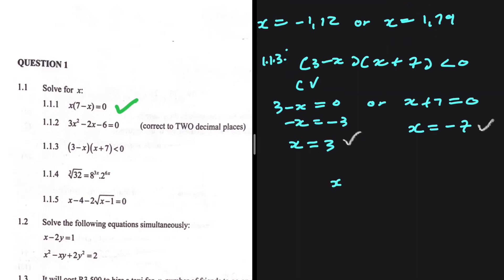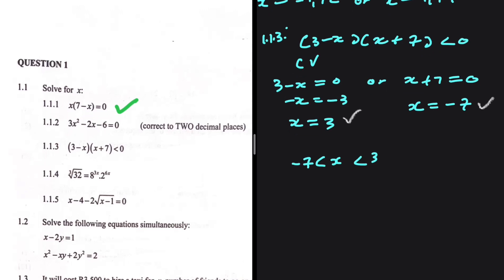So let's see if x lies between 3 and negative 7. If it doesn't lie between them, then it will lie outside. To test, we take a number between negative 7 and 3 — let's take 0 — and substitute it into our inequality. We get 3 multiplied by 7, which is 21, being less than 0. But 21 is not less than 0, so our solution is not between negative 7 and 3.